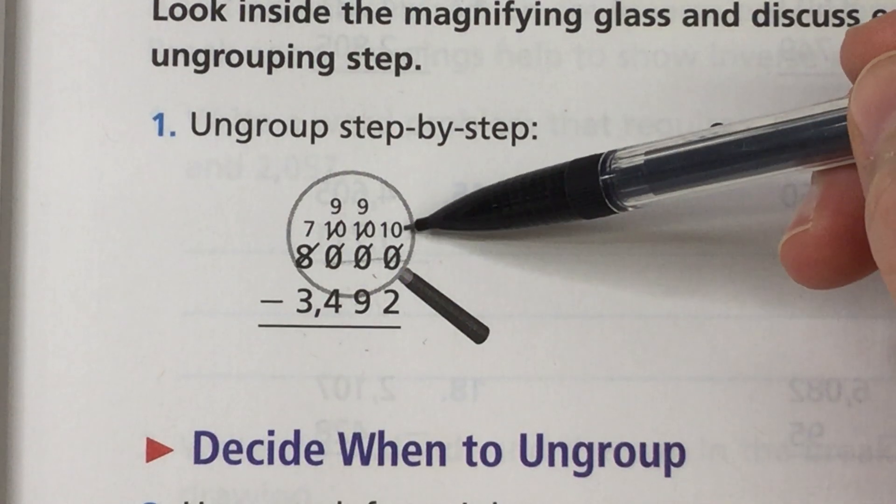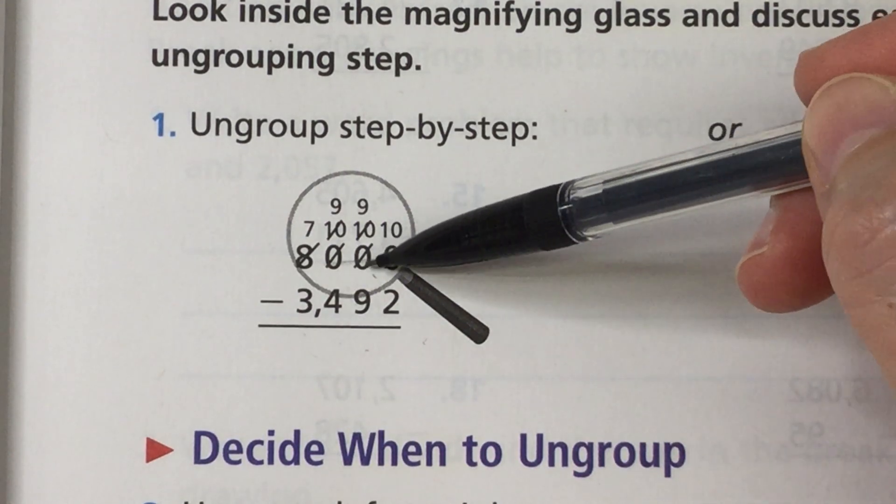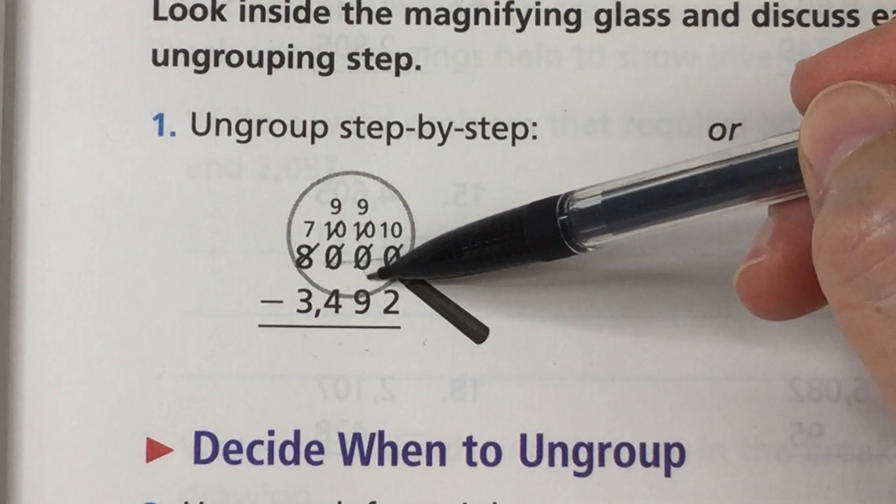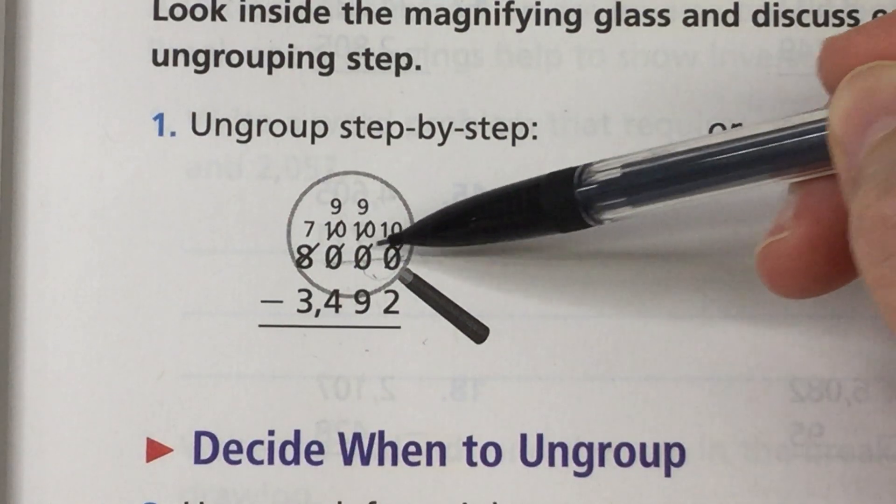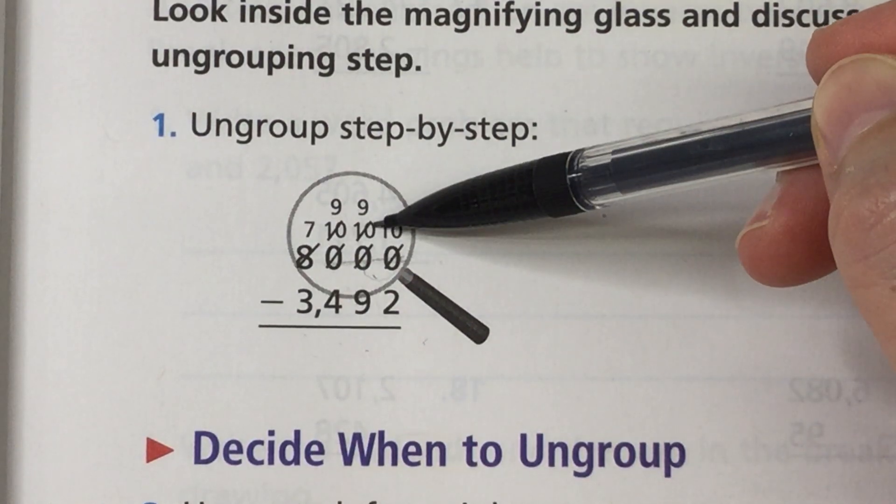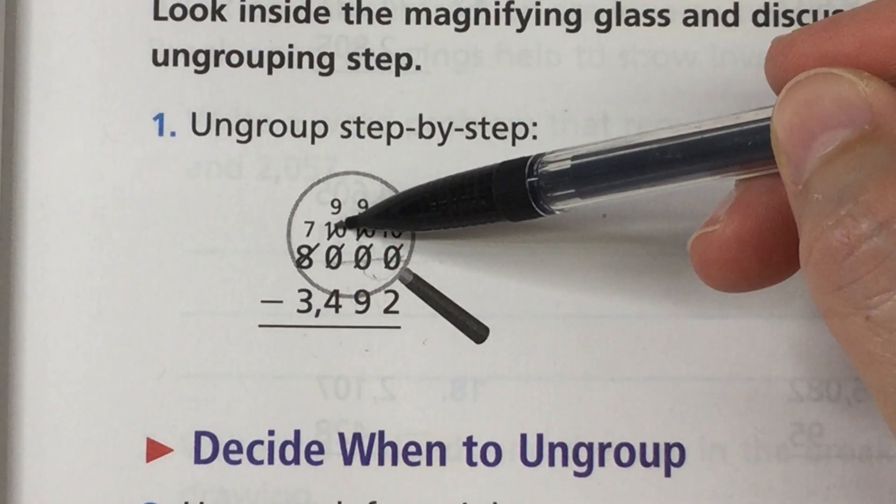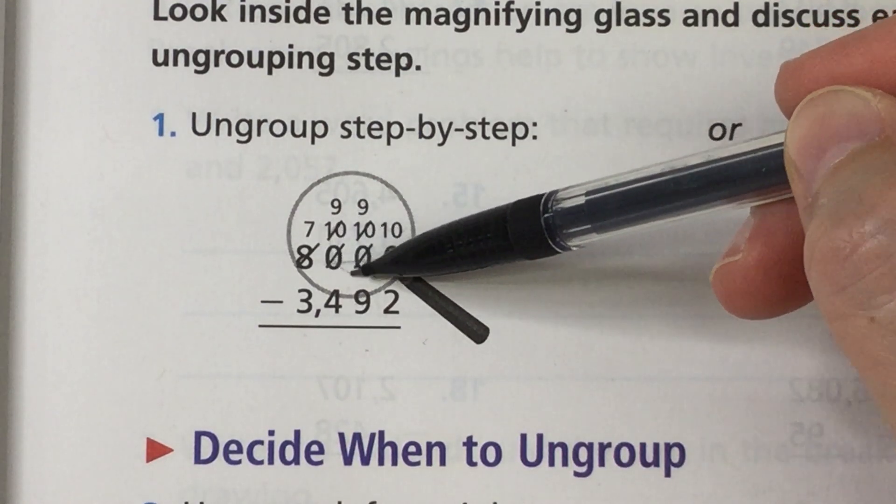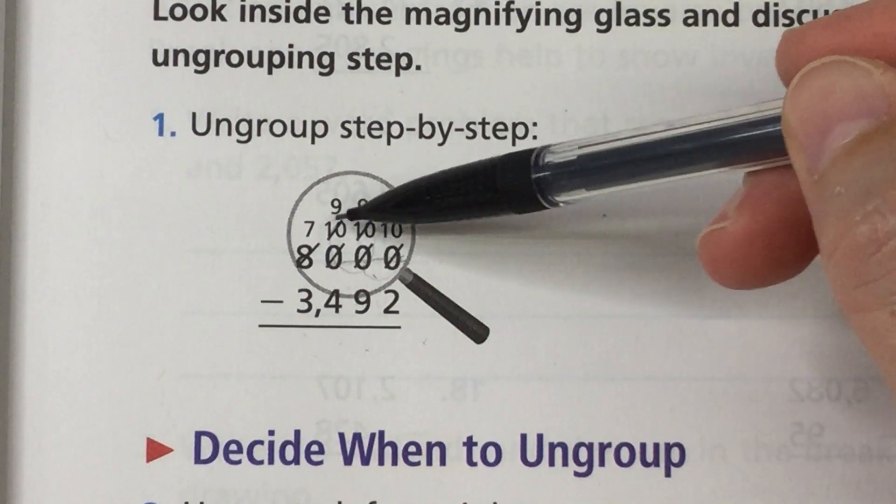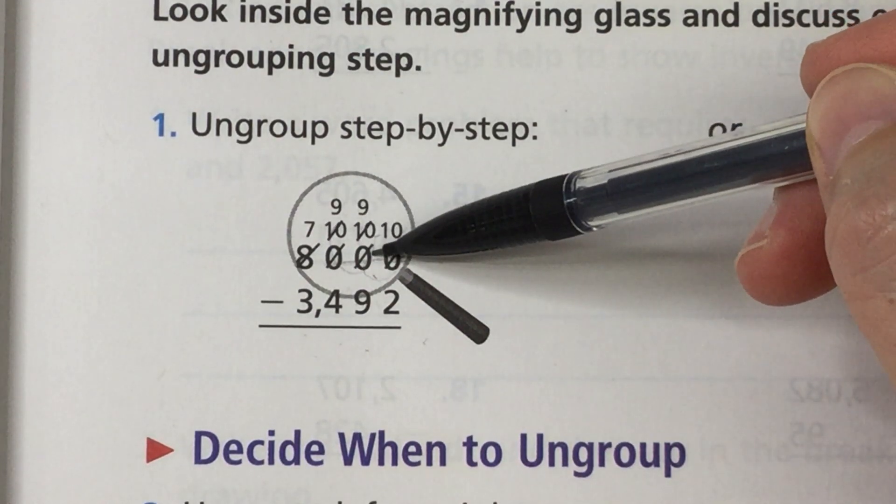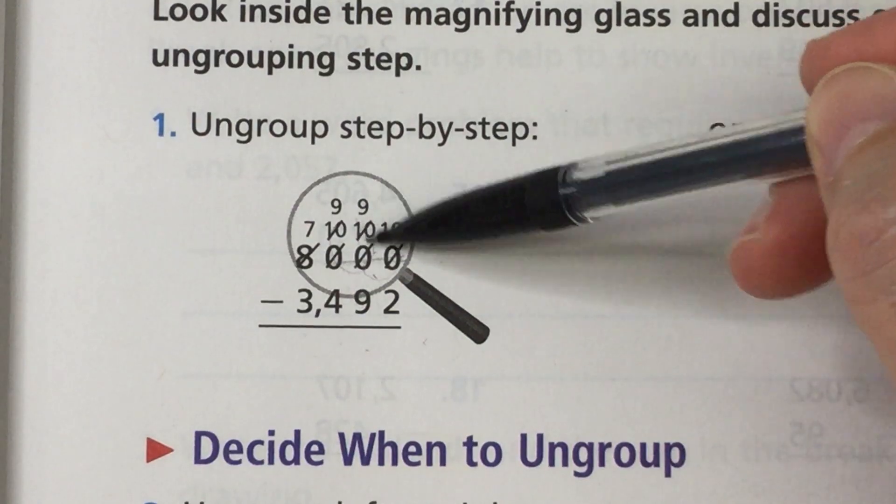This zero changes to a 10 because we're taking one 10 away from the tens place. So we cross out the zero and put a 10 there. This zero becomes a 10 because we're taking 10 tens from the hundreds. So 10 tens from the hundreds.